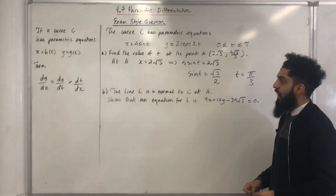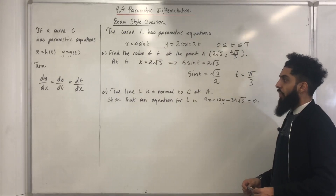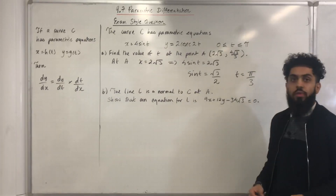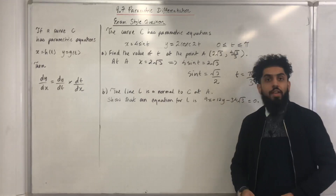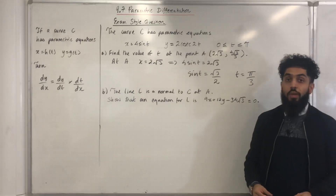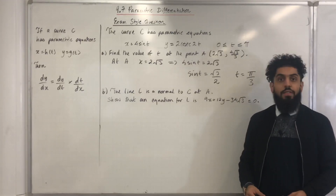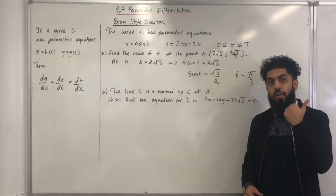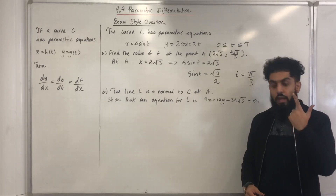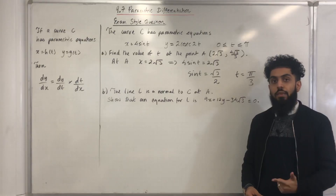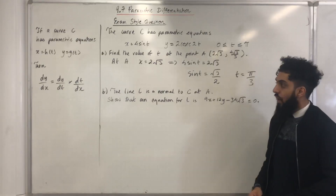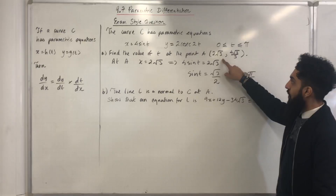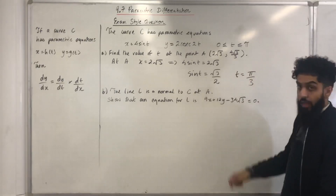Moving on to part B: the line L is the normal to C at A. Show that an equation for L is 9x plus 12y minus 34 square root 3 equal to 0. To find the equation of the normal to a curve C at any given point, you need two things: number 1, the coordinates that the normal passes through; number 2, the gradient of the normal. We are told that the normal L passes through coordinate A, which is 2 square root 3, 4 square root 3 over 3.